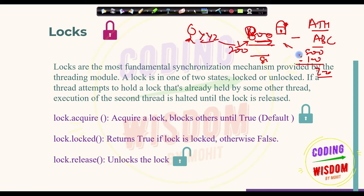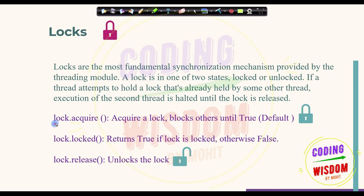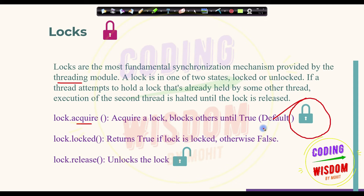In Python, the threading module's lock class provides the locking mechanism. It has some key methods: acquire() — puts a lock and blocks other threads until released; locked() — checks if a lock exists, returns true if locked; and release() — opens or releases the lock.